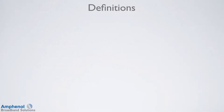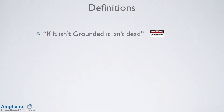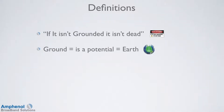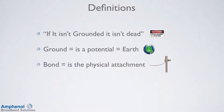Before we look at electrical definitions, remember this important safety tip: if it isn't grounded, it isn't dead. Unless it is verified, consider all conductors to be energized. We'll also cover additional safety items later in the video. Grounded is a potential in the earth — it doesn't mean it is zero voltage and no current. A bond is a physical attachment to power or telco grounds.